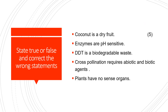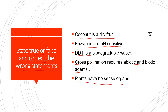Next is 'State True or False and Correct the Wrong Statement.' The statements are: coconut is a dry fruit; enzymes are pH sensitive; DDT is a biodegradable waste; cross-pollination requires biotic and abiotic agents; plants have no sense organs. Write true or false, and always correct the false statement — don't miss that.